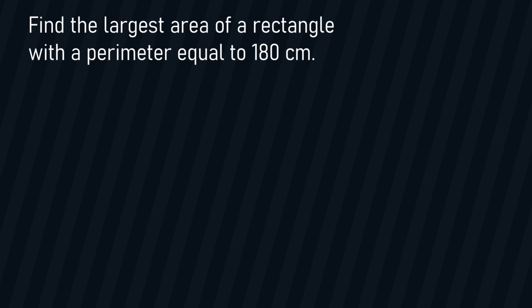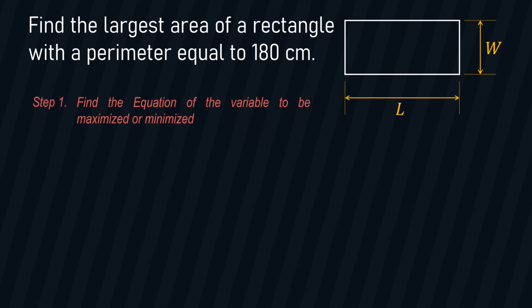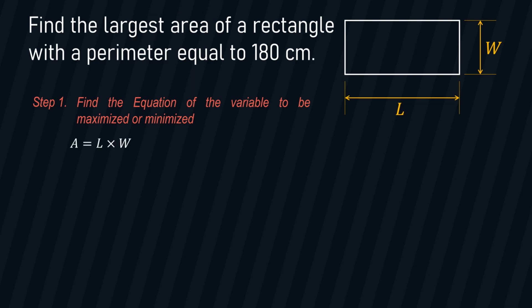In this problem, we have a rectangle with unknown dimensions. We'll let L be the length and W be the width. To solve step number one — find the equation of the variable to be maximized or minimized — in this problem, we are maximizing the area. So we will find the equation for area, and for a rectangle, that is length times width.